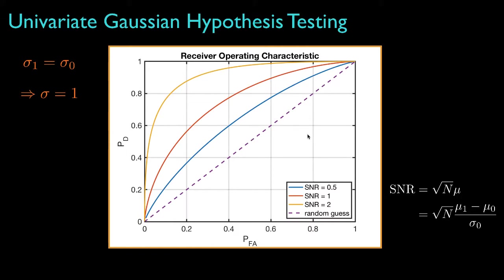Here, for example, are the ROCs for situations when the signal-to-noise ratio is 0.5, 1, and 2, where the signal-to-noise ratio is defined as the square root of N times the parameter mu, which is the difference between the means divided by the common standard deviation for both hypotheses.